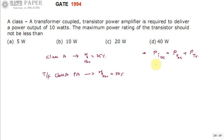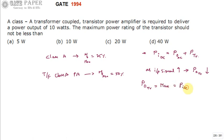The disadvantage of Class A power amplifiers is that whenever no signal is applied, the total input power is dissipated across the transistor. As you apply an input signal, some power drops across the load and the remainder drops across the transistor. As the input signal amplitude increases, power dissipation across the transistor decreases. Maximum transistor dissipation equals the input DC power when no signal is applied.